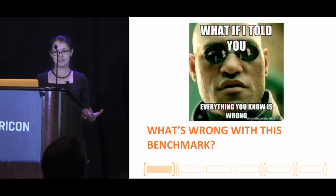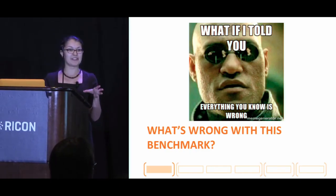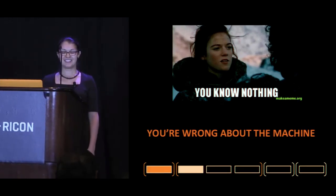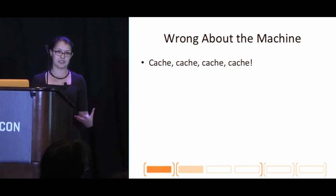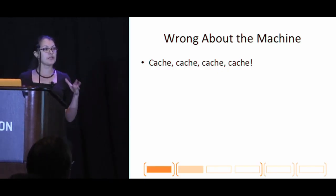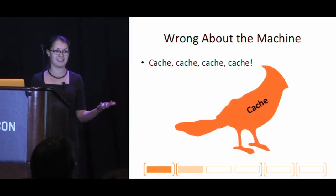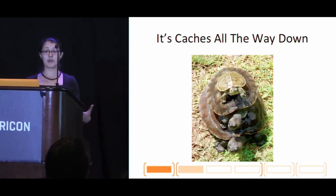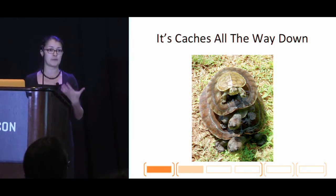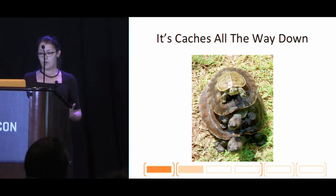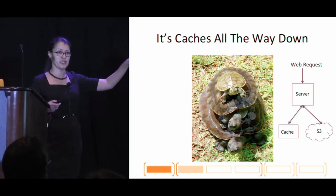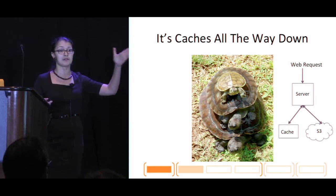So what's wrong with this benchmark? When it comes to machines, you know nothing, Jon Snow. In our industry we deal a lot with caches in all the different layers of our applications and systems, and our favorite approach to any latency problem is just put a cache on it — it's caches all the way down. Caches are usually structured in a hierarchy, and only one cache level is accessed at a time. In our setup, the web request comes to the server, the server talks to either the cache or S3 to fetch the image, but only one location will be accessed.